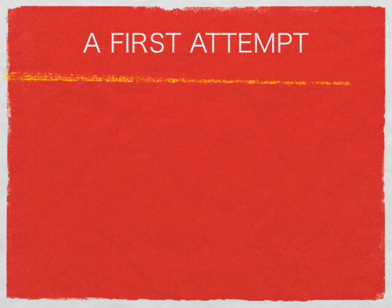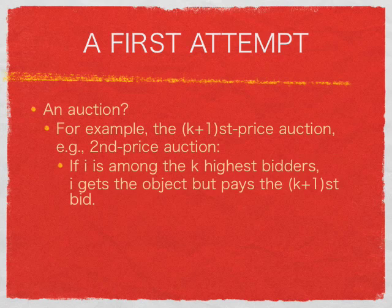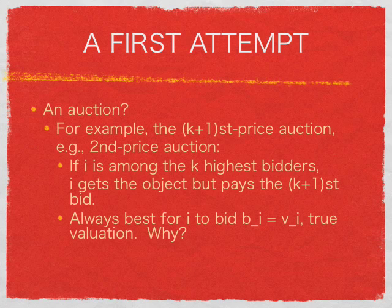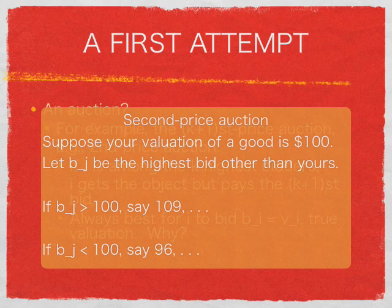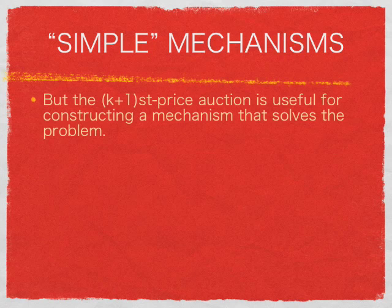Let's try to solve the problem. How about an auction? Take the k+1 price auction, for example. For k equals 1, this is the second price auction. In this auction, if agent i is among the top k bidders, then she gets the object but only pays the k+1st bid. Another property of this auction is that it is always best for each agent to bid her true valuation. Here's an argument for the second price auction: suppose you are willing to pay up to $100 for a good. If the highest bid other than yours is greater than 100, say 109, then you'd lose value equal to $9 if you get the good — so you'd better not get it. That's ensured as long as you bid $100. Unfortunately, auctions are not good for our purpose because we want to avoid transferring money between agents.